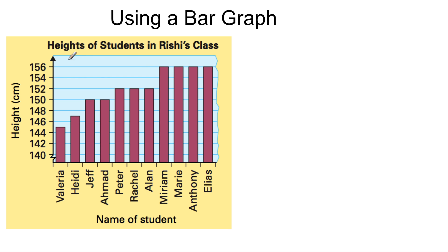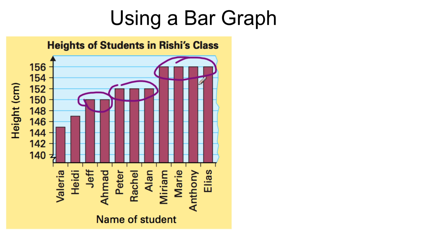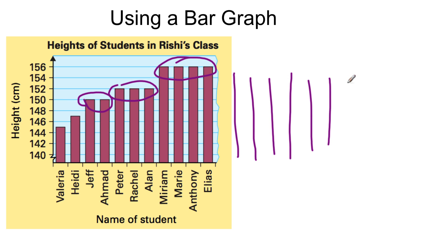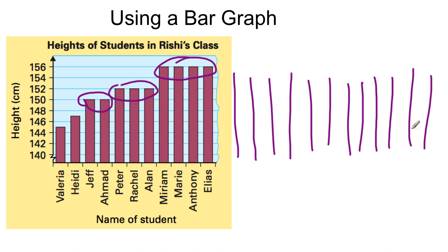Here's the bar graph showing the heights of the students in Rishi's class. This is not the whole class — there are 30 students. Each bar represents an individual kid; Valeria is this height, these two kids share the same height. This is what we call redundant information — we don't care that Anthony is 156 centimeters, we care how many students are 156 centimeters. With 30 kids, this bar graph keeps going and going, taking up a lot of space. We need to know how many are a specific height, not who is a specific height, and we can do that through a histogram.